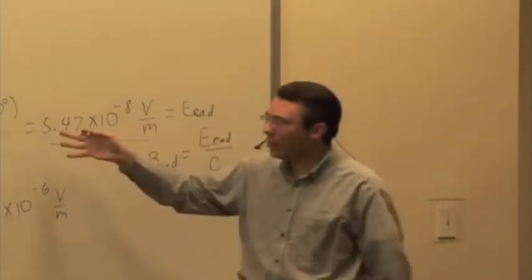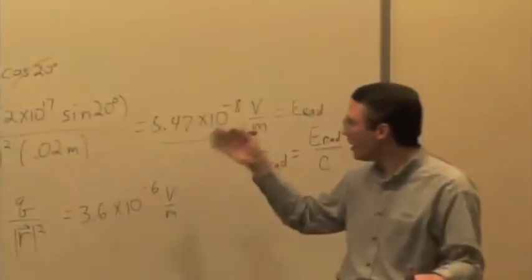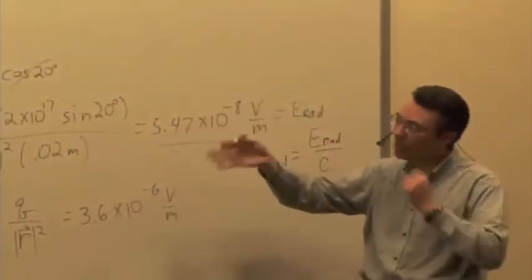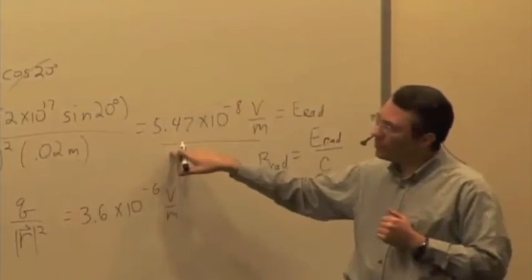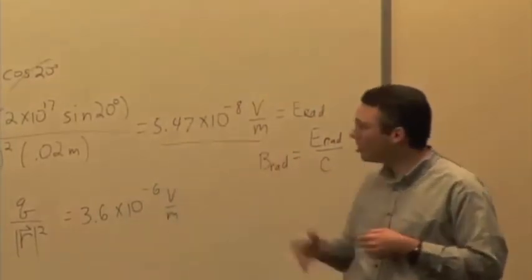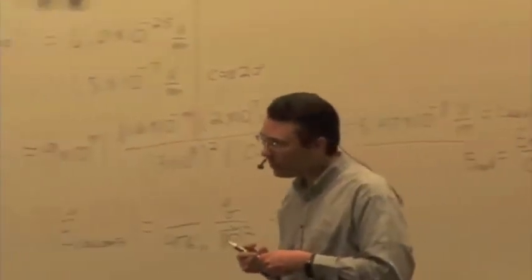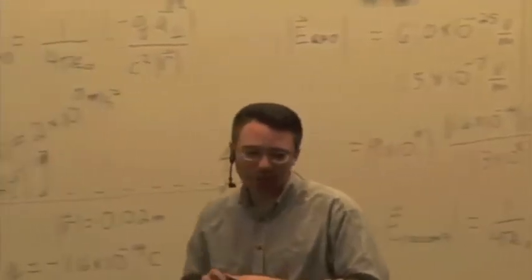So if you need to find the radiative component, you can do that easily because once you know the direction of propagation, you know the magnitude of the electric field, you can easily figure out the direction of the magnetic field and its magnitude as well.